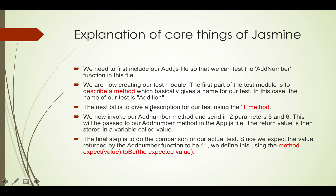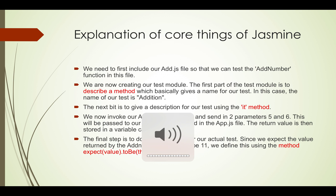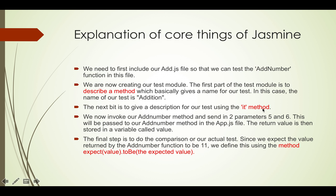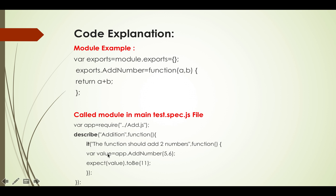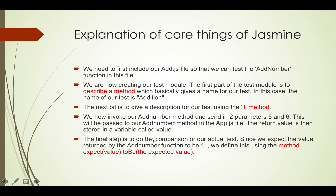The next part is to give a description for our test using the it method. We invoke our addNumbers method and send in two parameters: 5 and 6. This calls the addNumber method in the app.js file. The return value is then stored in a variable called value. The final step is to do the comparison — our actual test. Since we expect the value returned by the addNumber function to be 11, we define it using: expect(value).toBe(11).